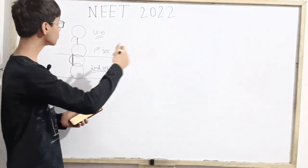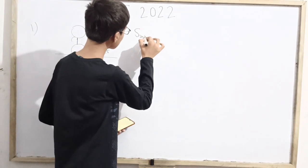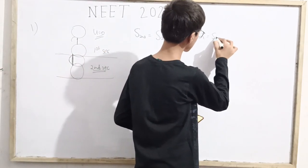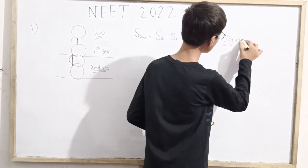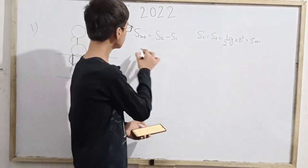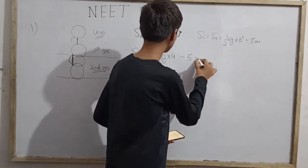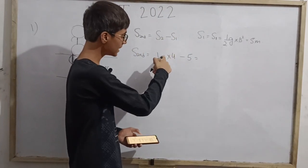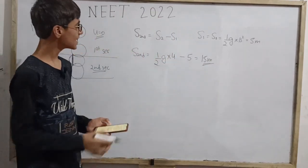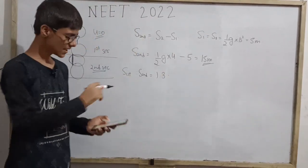For those who need to verify this numerically, let's work it out. Distance covered in 1st second is simply half g times 1 squared, which equals 5 metres (taking g = 10). Distance covered in 2nd second is half g times 2 squared minus 5, which gives half times 10 times 4 minus 5 — that is 20 minus 5 equals 15 metres. So the ratio for the first two terms is 5 to 15, which is 1 to 3.